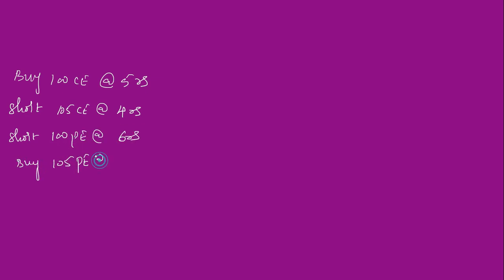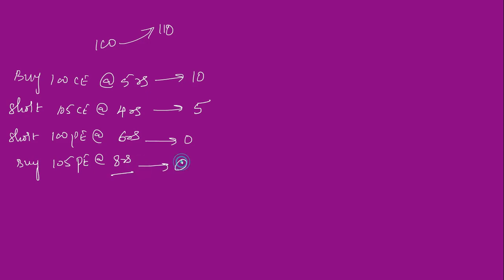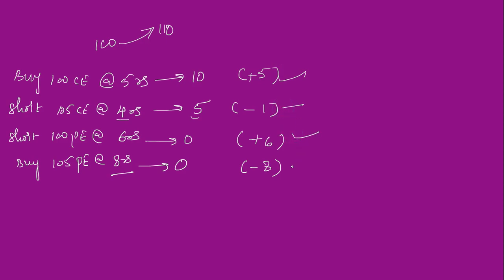Say from 100 the stock goes to 110. On expiry: 100 call becomes 10 (profit 5), 105 call becomes 5 (loss 1), 100 put becomes 0 (profit 6), 105 put becomes 0 (loss 8). Net: 5 + 6 = 11 minus 1 + 8 = 9, giving 2 rupees profit. Even if the stock goes to 120: 100 call becomes 20, 105 call becomes 15, both puts become 0. You make 15 + 6 = 21 minus 11 + 8 = 19, again 2 rupees fixed profit.